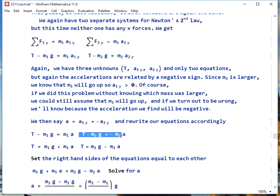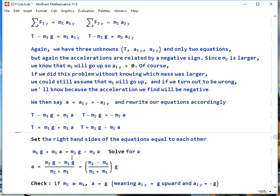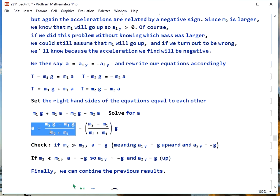We get T minus m2g equals negative m2a, and T minus m1g equals m1a. Both of these things can be written in terms of T, and then we can set the two right sides equal to each other. When we do a little bit more algebra, we get that the acceleration is the difference of the masses divided by the sum of the masses times g.